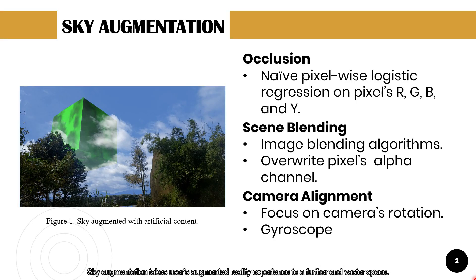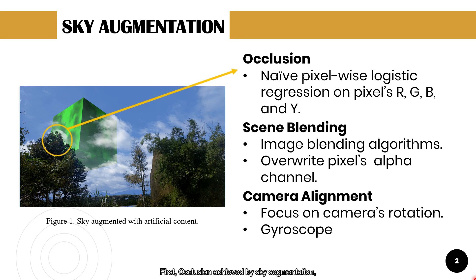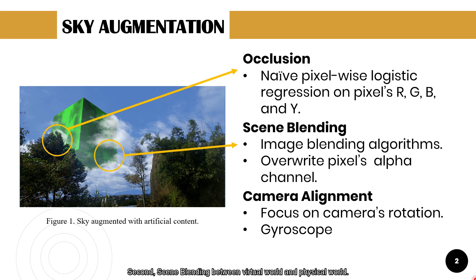Sky augmentation takes users' augmented reality experience to a further and vaster space. It has three main components. First, occlusion achieved by sky segmentation — here we experiment with a simple logistic regression model. Second, scene blending between virtual world and physical world. Third, camera alignment to match up virtual objects and real objects translation and rotation.